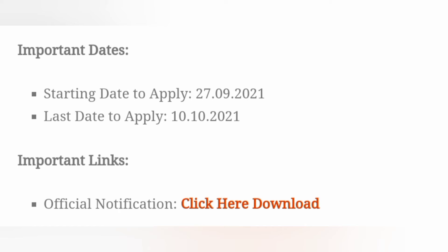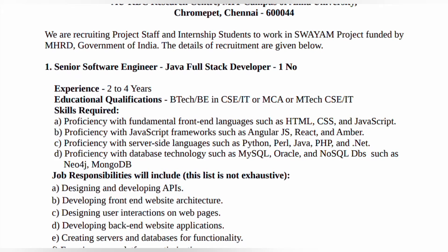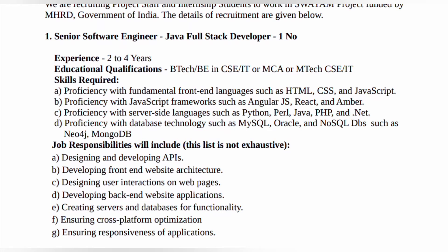For the Senior Software Engineer (Java Full Stack Developer) post, there is 1 vacancy. Experience required: 2 to 4 years. Educational qualification: BTech or BE in CSE or IT, or MCA, or MTech in CSE or IT. Skills required: Proficiency in HTML, CSS, JavaScript; frameworks like Angular, React; server-side languages like Python, Java, .NET; and databases like MySQL, Oracle, and NoSQL databases.